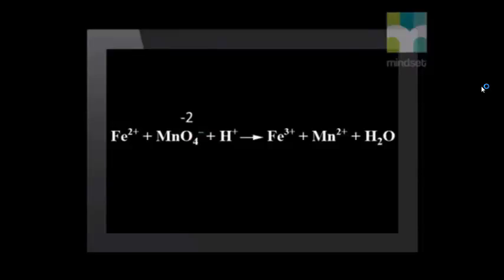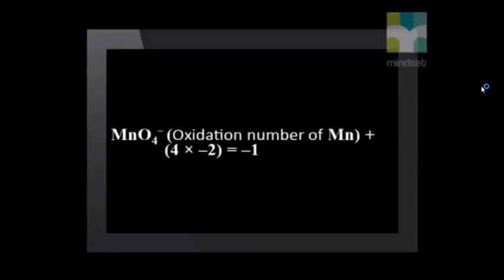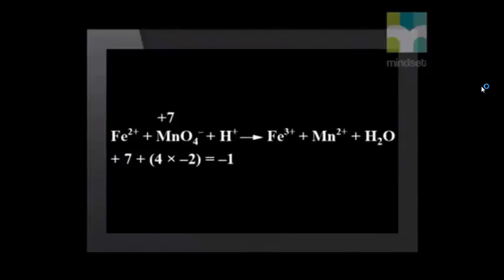We know that each oxygen atom has an oxidation number of -2. We can work out the oxidation number of the manganese atom since the sum of the oxidation numbers of the atoms must equal the oxidation number of the ion. Therefore, the oxidation number of manganese in the manganate ion is +7.